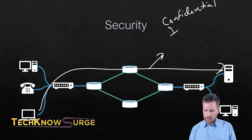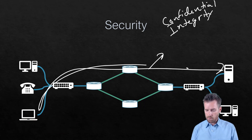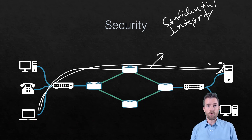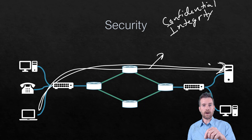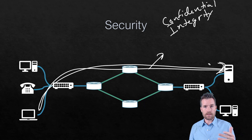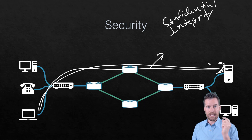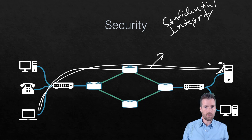We're also concerned about integrity. Integrity means that information doesn't change from point A to point B — no one can go in and manipulate or change data, or cause corruption along the way. So when it gets to the other side, the data remains intact, nothing has changed it, and it's in its original form.